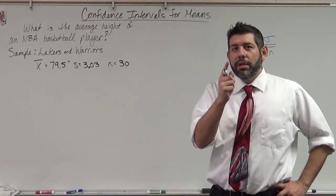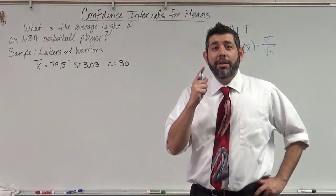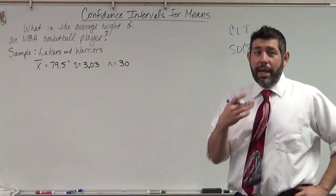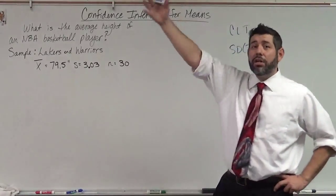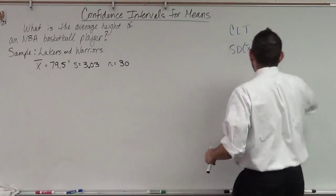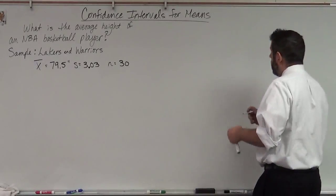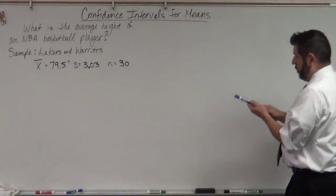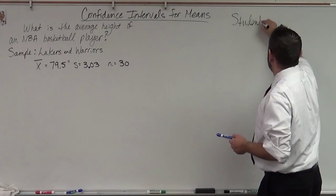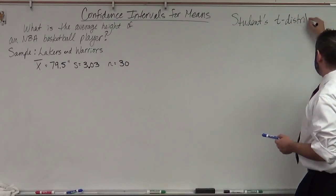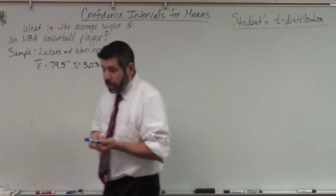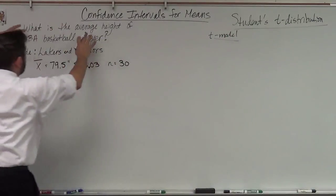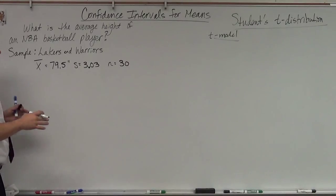This really cool guy named Gossett came up with a new model — not a normal model, but something close to a normal model — that will help us do sampling distributions for cases where n is not very large. What we have is something called Student's t-distribution, which we call a t-model. The t-model is for a sampling distribution of means when we don't have a very large sample.